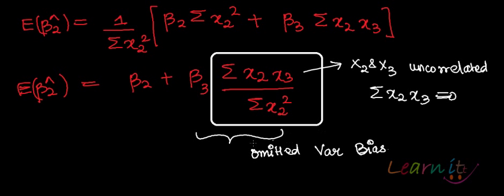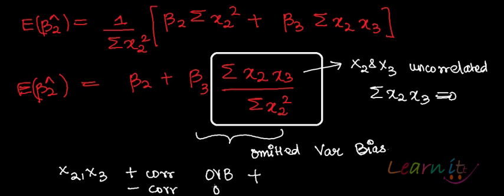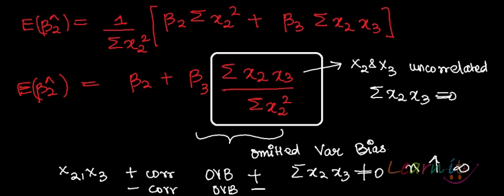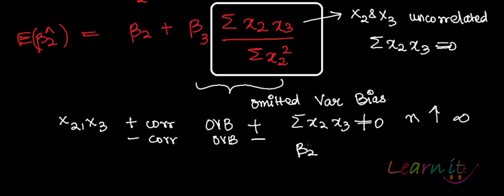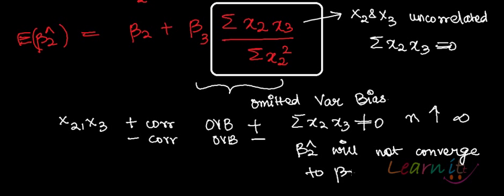If x₂ and x₃ are positively correlated, the omitted variable bias has a positive direction. If they are negatively correlated, the bias has a negative direction. Also, if summation x₂x₃ is not equal to zero and n increases indefinitely, then β̂₂ will not converge to β₂, meaning β̂₂ will not be consistent.